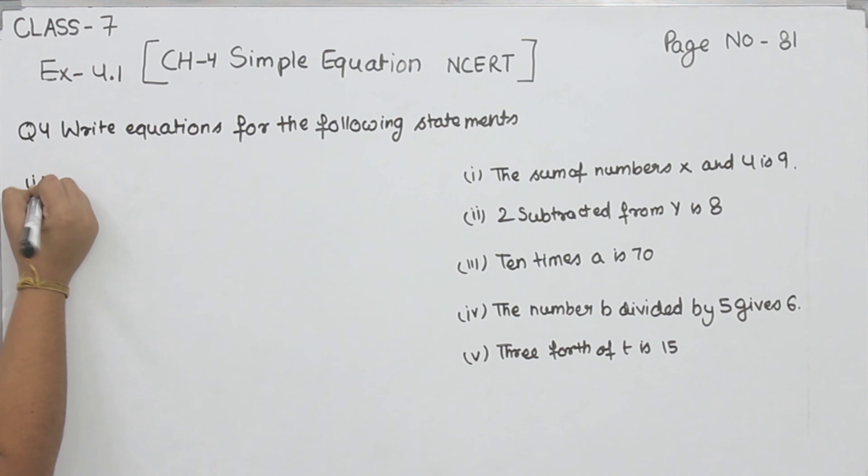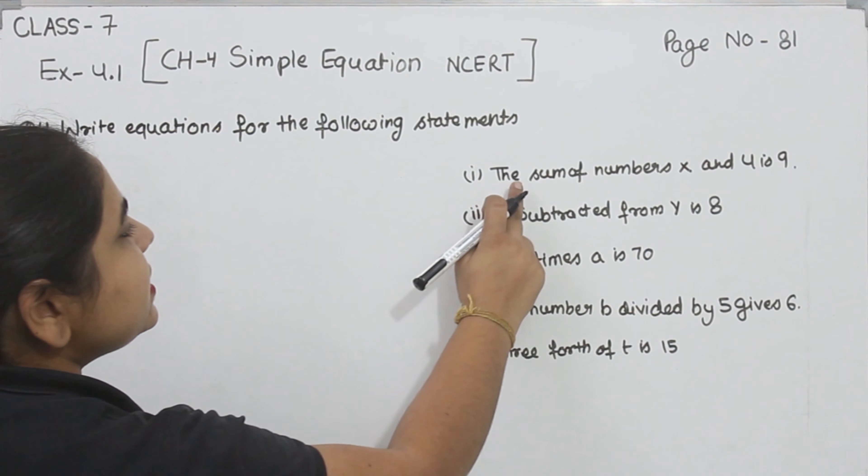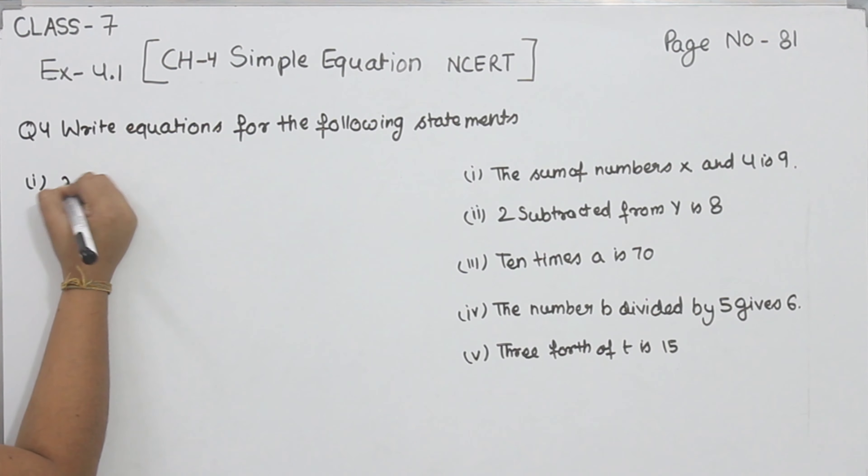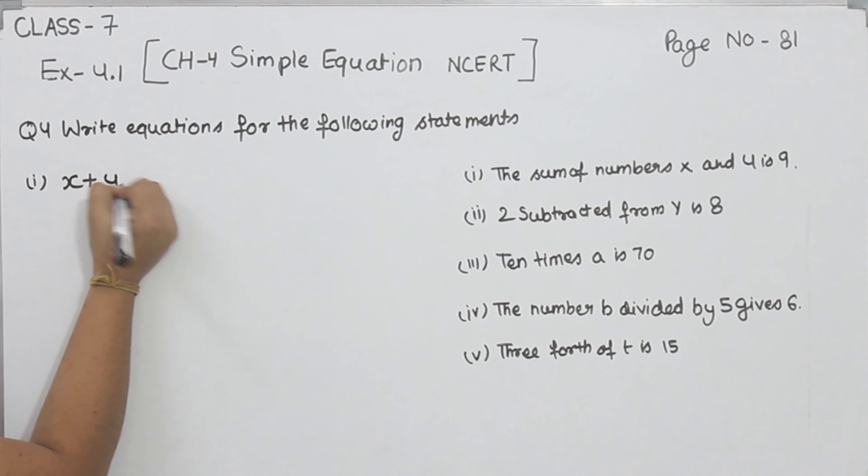Let's start with part 1. It says the sum of number x and 4 is 9. So the sum of x and 4 is 9, that is equal to 9. Sum means plus, so x plus 4 is equal to 9.